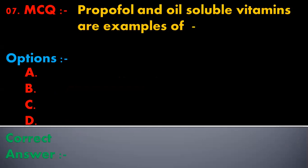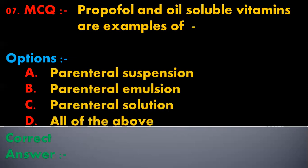The seventh multiple choice question is: propofol and oil-soluble vitamins are examples of — options are parenteral suspension, parenteral emulsion, parenteral solution, or all of the above. The correct answer is parenteral emulsion. Propofol and oil-soluble vitamins are examples of parenteral emulsion.